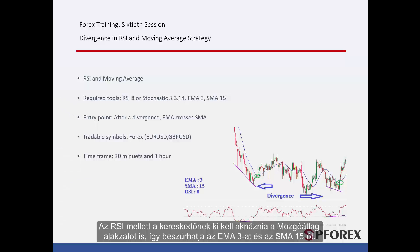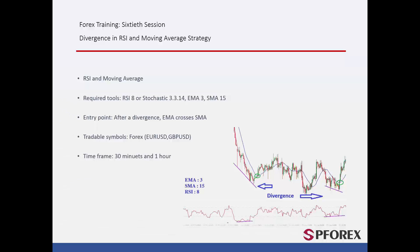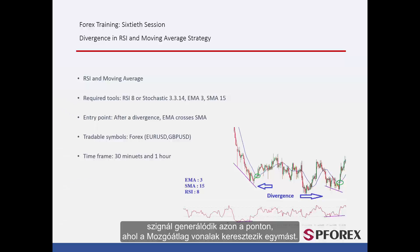Alongside RSI, a trader must exploit the Moving Average pattern, so EMA3 and SMA15 can be inserted. A trader can also utilise other patterns such as Stochastic 3.3.14 or MACD instead of RSI 8. Whenever RSI or its alternate patterns detect a divergence, a signal will be generated on the spot where the moving average lines cross each other.